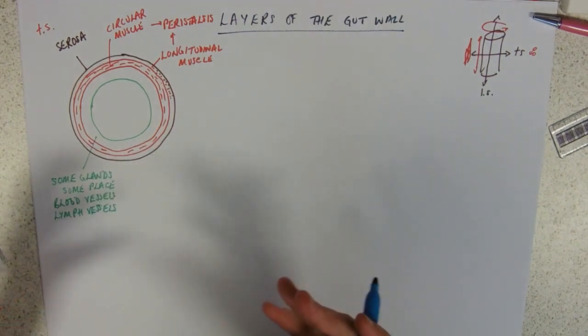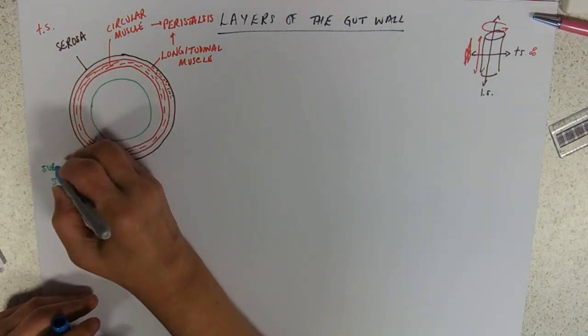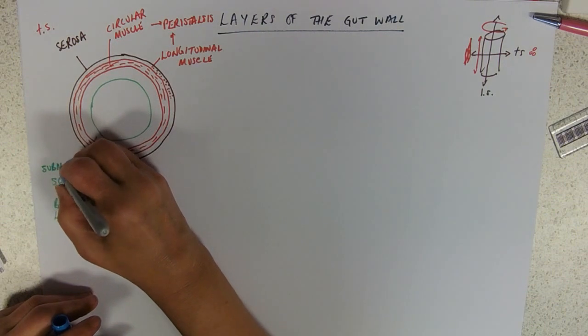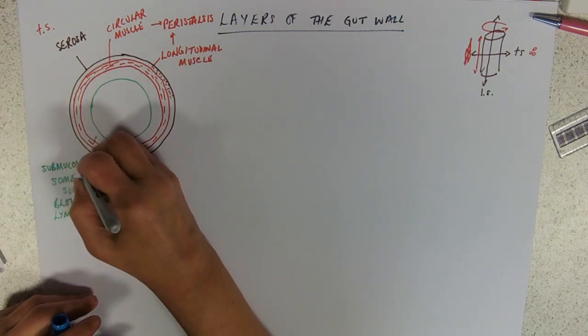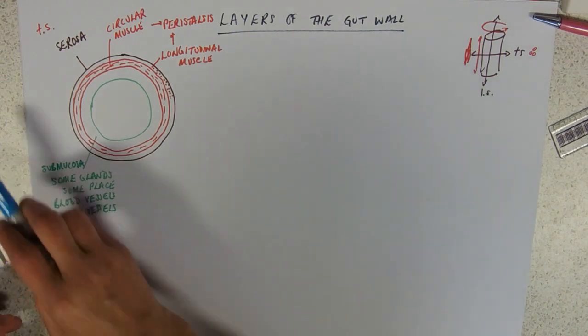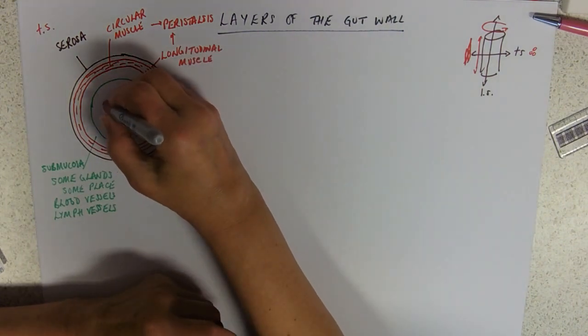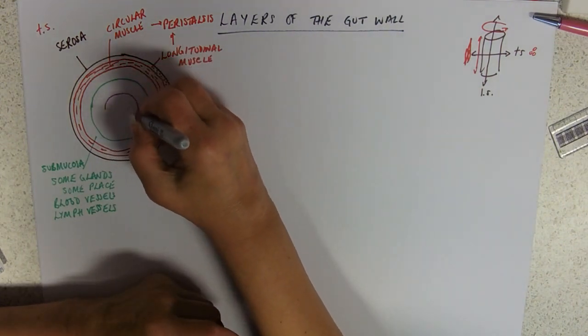That's the submucosa, so called because it's under the mucosa, which is kind of the business end of the whole gut. Then we've got the mucosa.